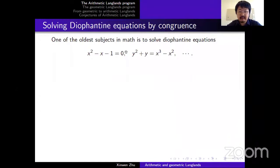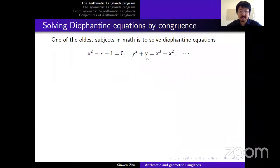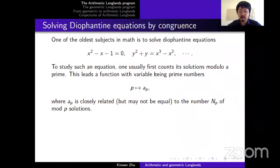One of the oldest subjects in math is solving Diophantine equations. To study such an equation, one should first count its solutions modulo a prime. This gives us a function with primes as the variable: p goes to a_p, where a_p is more or less the number of mod-p solutions of the Diophantine equation. For a quadratic equation, people let a_p equal m_p minus one.